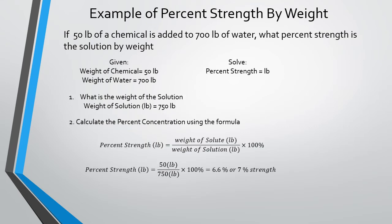Now calculate the percent concentration using the formula. Percent strength equals weight of solute over weight of solution times 100. Plugging in our numbers: 50 pounds over 750 pounds times 100 equals 6.6%, or 7% strength by weight if you round up.